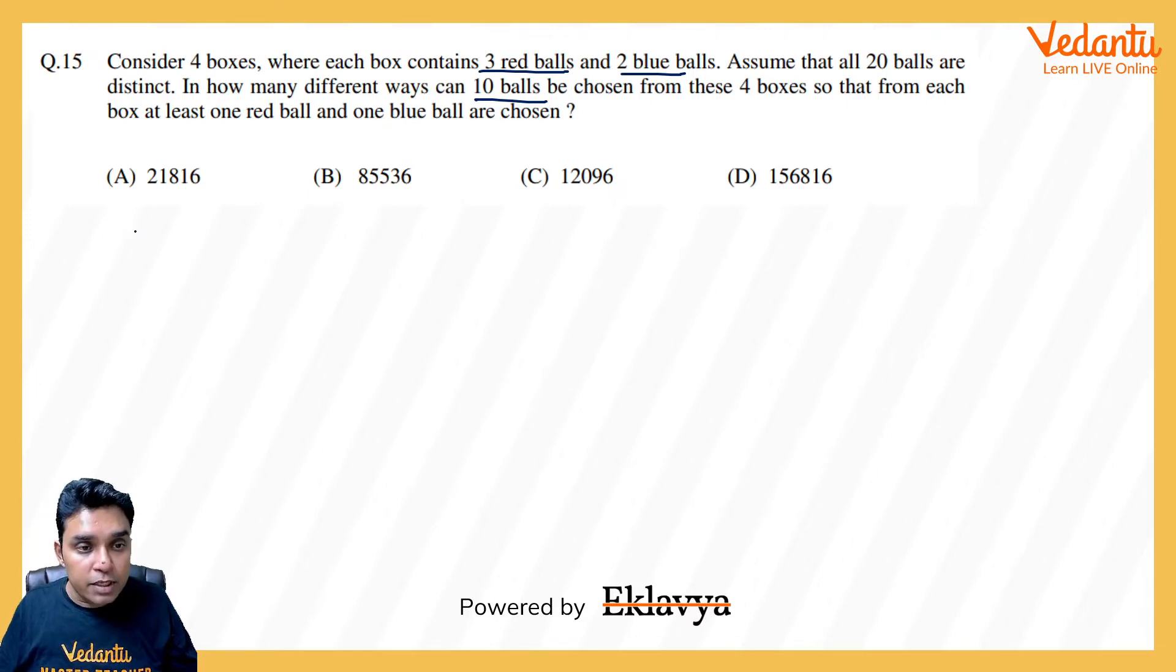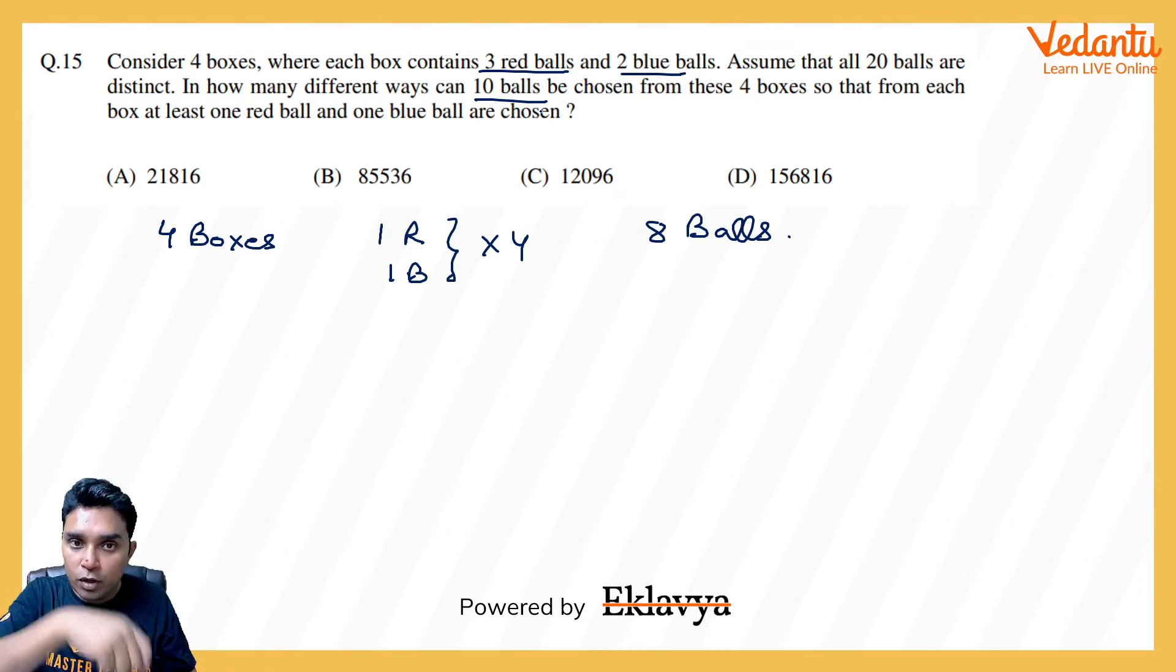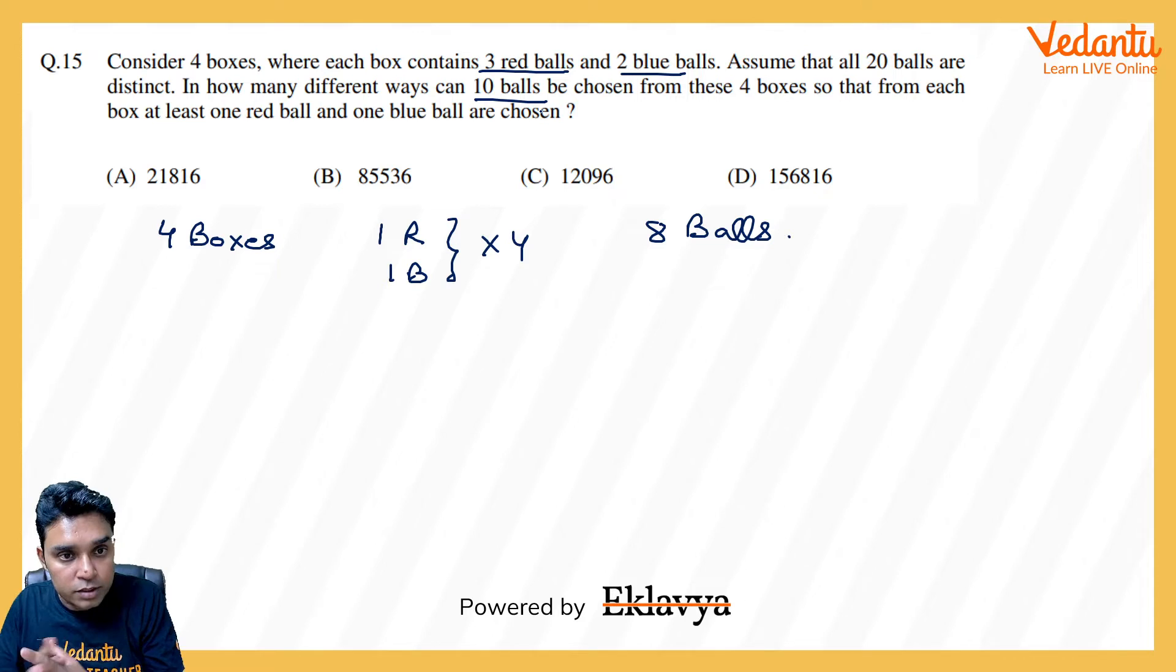Now please see, because there are 4 boxes and from each box I need to take 1 red 1 blue, so if I multiply this by 4 we are supposed to get 4 balls from here itself. And we are required to get 10 balls so I need to get 2 more balls. And these balls will be taken from these boxes maybe from 1 box itself or maybe from 2 boxes.